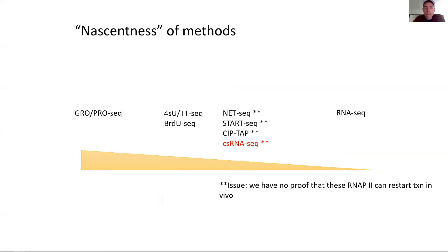A quick word on nascentness. GRO-seq and PRO-seq, which is basically make nuclei, you let the polymerase run on, incorporate artificial nucleotides and IP that, is the most nascent of the methods. It comes with its own kind of worms including that it's actually not reproducible or harder to reproduce to generate reproducible data.